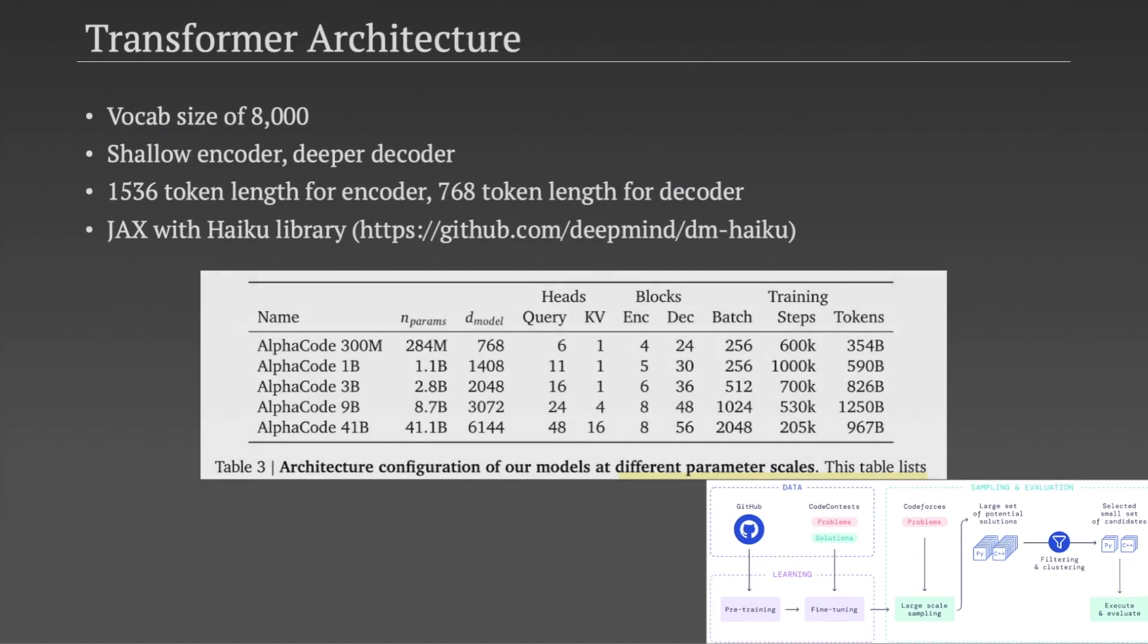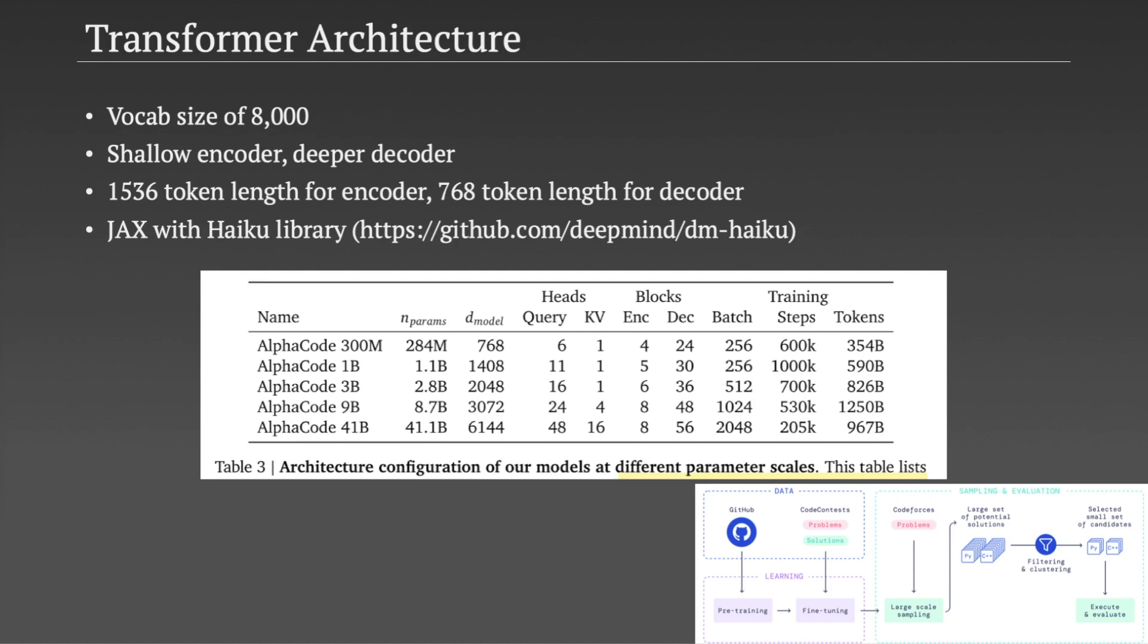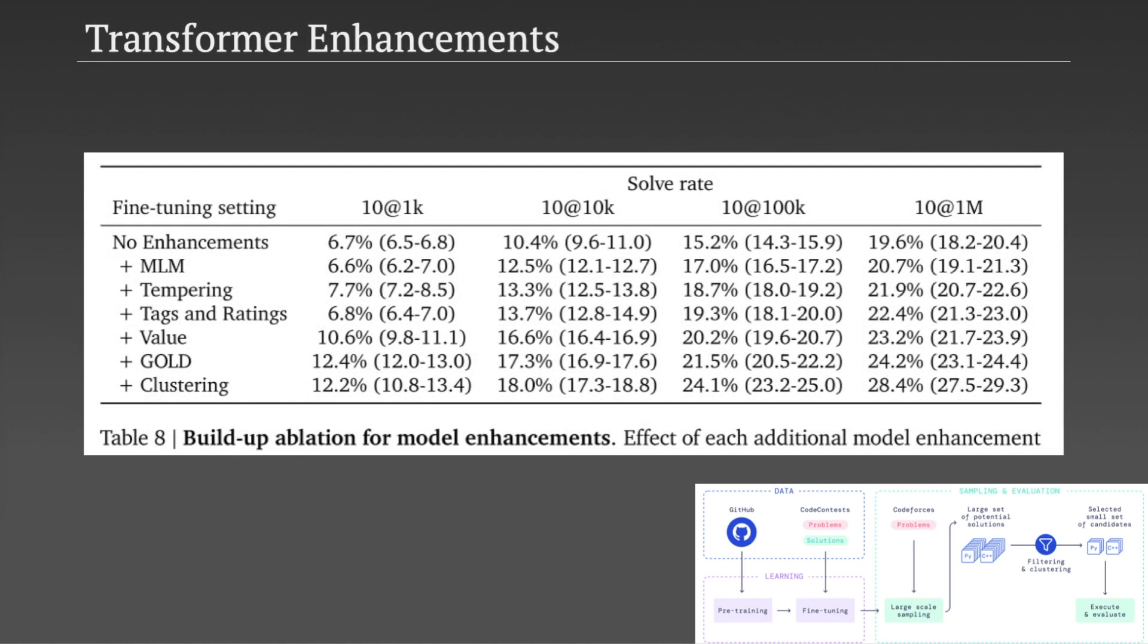This slide shares some facts about the transformer architectures. The team do experiment with various model sizes. As you'd expect, the bigger models tend to perform better. The encoder and decoder are themselves made up of multi-headed attention layers, which are quite standard and have been described very nicely elsewhere. So I'm not going to cover them here. That summarizes the training process and architecture of AlphaCode.